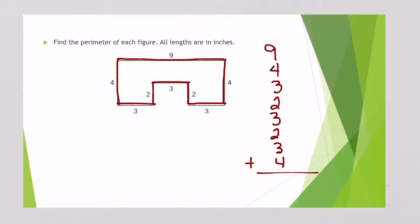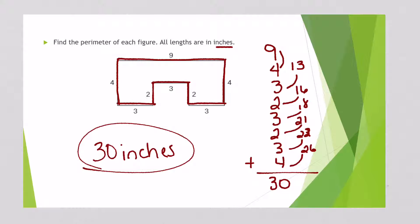So now adding all those up, 9 and 4 is 13, 13 and 3 is 16, 16 and 2 is 18, 18 and 3 is 21, 21 and 2 is 23, 23 and 3 is 26, and then 26 and 4 is 30. And it tells us up here that this is in inches. So 30 inches is the perimeter of this figure.